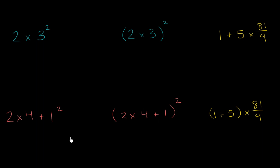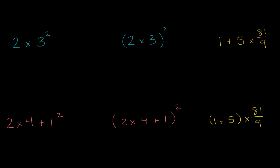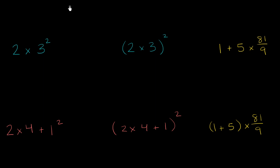I'm assuming you've given a go at it. Now let's work through them. So when we see something like this, we have to remember our order of operations. We have 2 times 3 squared. And we have to remember that the first thing we need to think about are the parentheses.